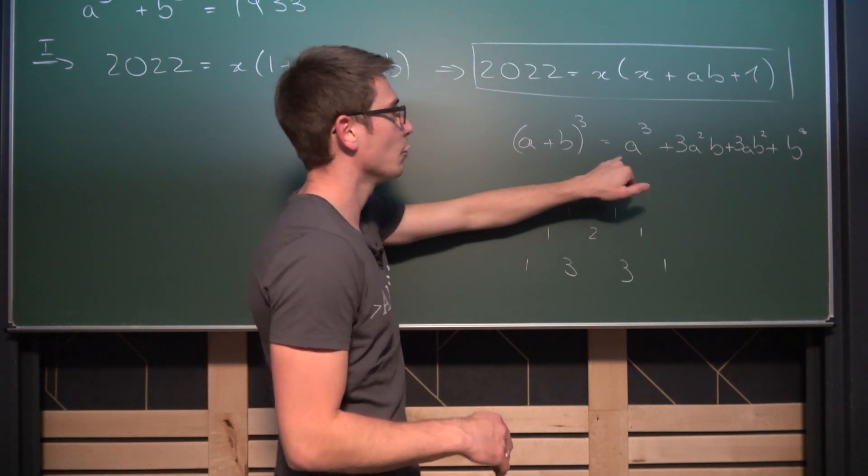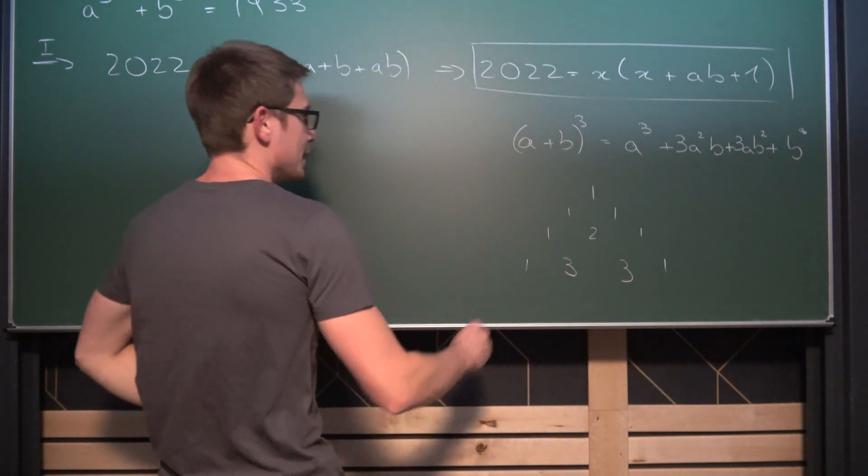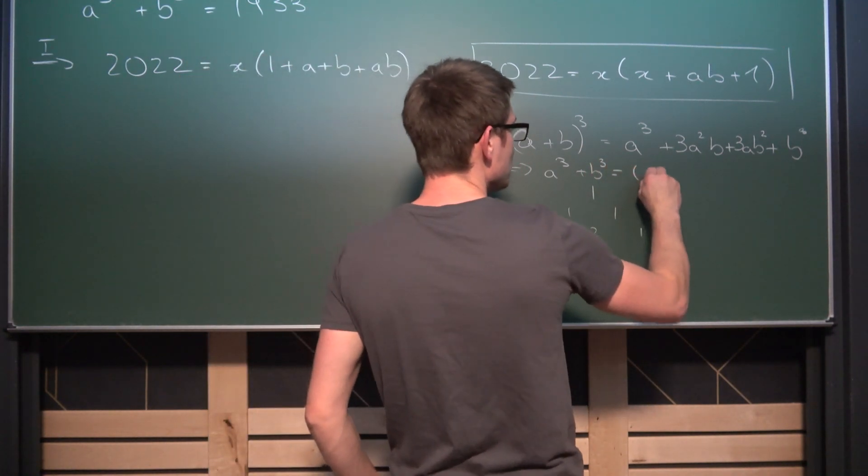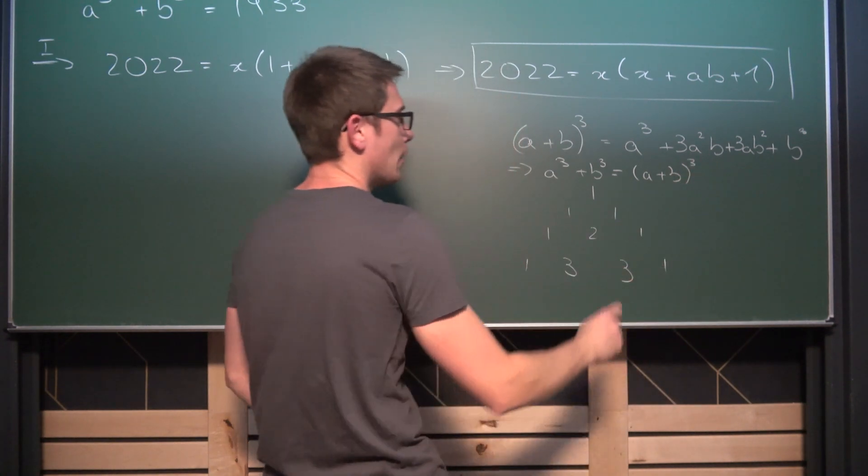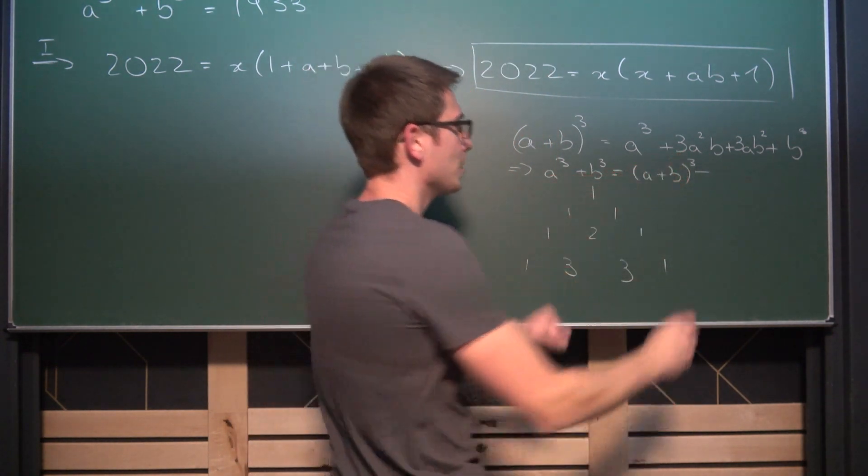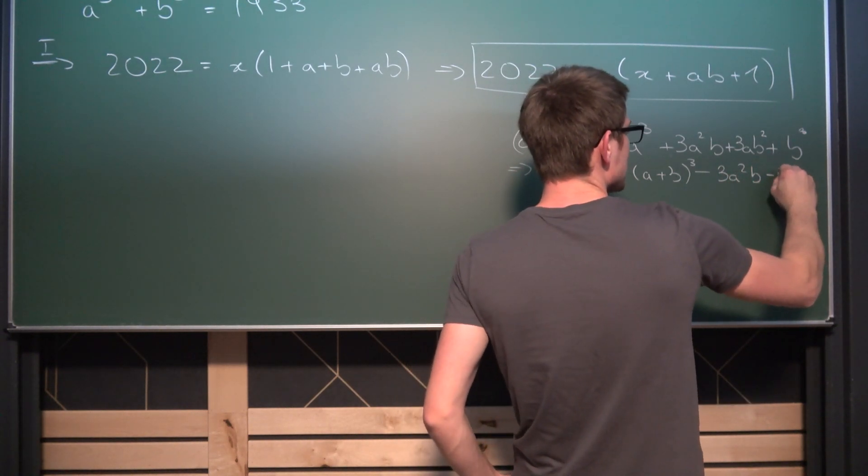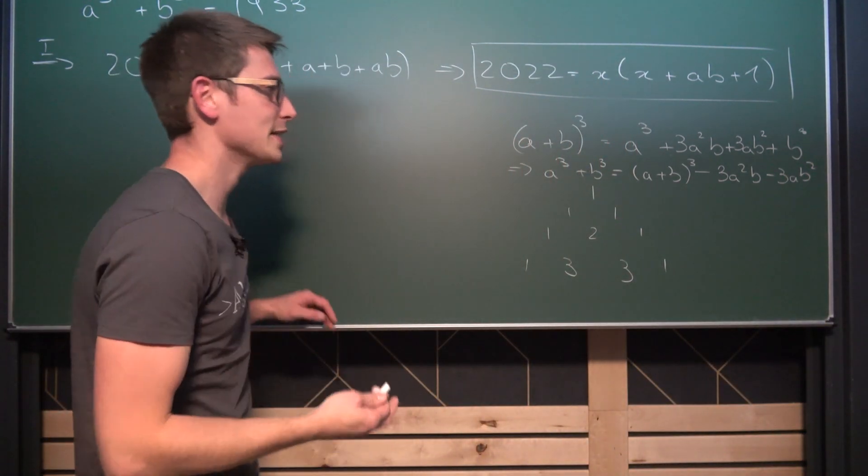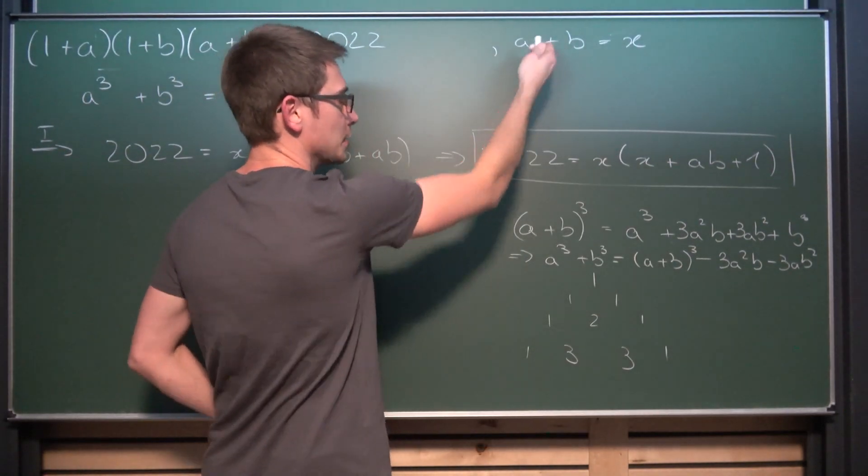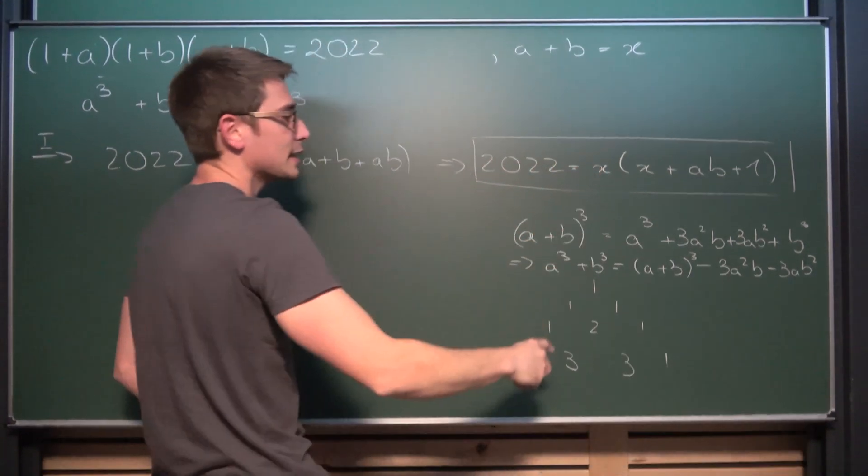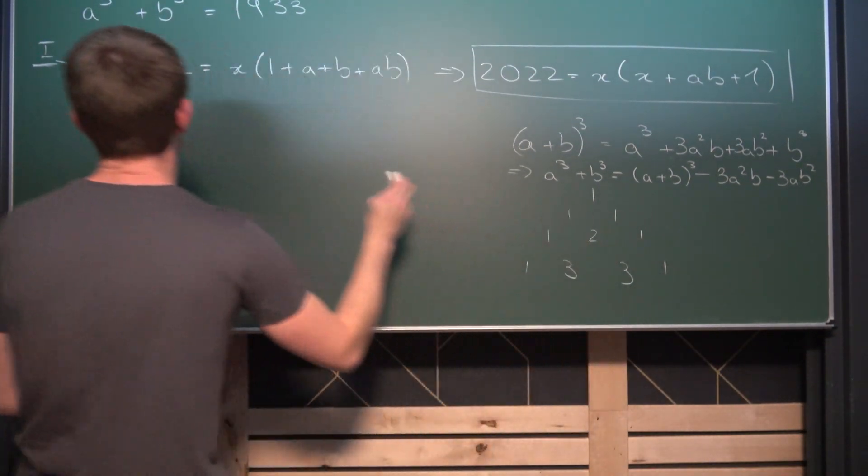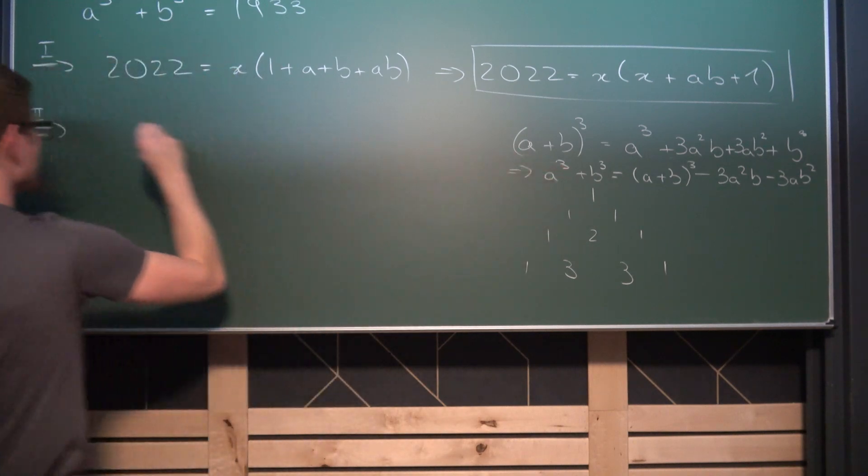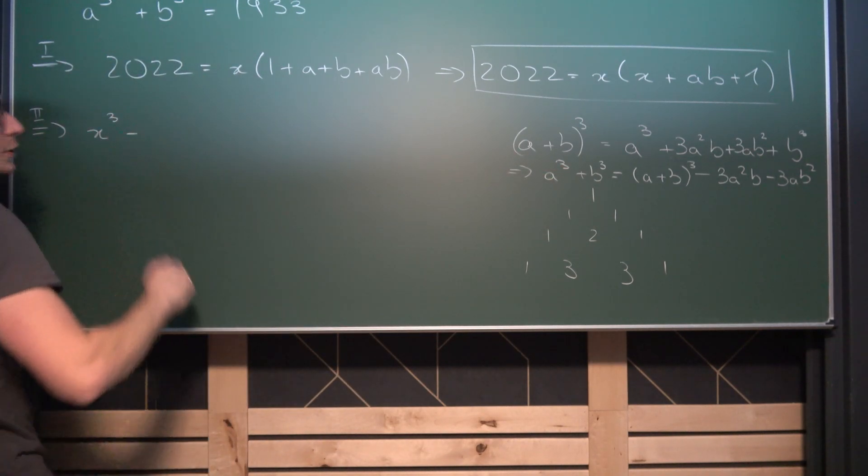Now we can solve this a little bit for a to the third power plus b to the third power. Namely what we are going to get is that a to the third power plus b to the third power is the same as a plus b to the third power minus and then we have 3a squared b minus 3ab squared. And now something magical is going to happen and I really like this factorization and how it comes apart with our original question right here. Namely you see that we have x being equal to a plus b. So we can substitute this into here.